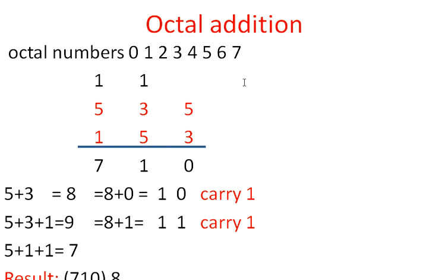And the octal addition: octal number addition, 5 plus 3. In octal, the additive principle — the value of 3 and 5 — 3 plus 5 is 8. The base number is 8. 8 plus 0: since the base is 8, 8 is instant 1 and 0 is instant 0. Carry is 1. 5 plus 3 is 8.